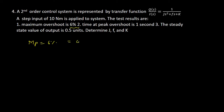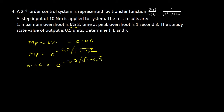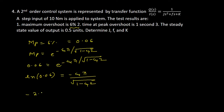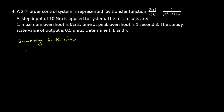It is given that the maximum overshoot is 6%, so Mp = 0.06. We know Mp = e^(−ζπ / √(1−ζ²)). Substituting: 0.06 = e^(−ζπ / √(1−ζ²)). Taking the natural log: ln(0.06) = −2.8134 = −ζπ / √(1−ζ²). Squaring both sides: 7.915 = ζ²π² / (1−ζ²).